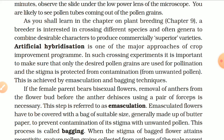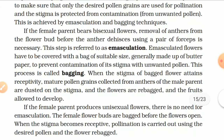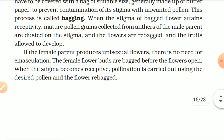Emasculated flowers have to be covered with a bag of suitable size, generally made of butter paper, to prevent contamination of the stigma with unwanted pollen — this process is called bagging. When the stigma of the bagged flower attains receptivity, mature pollen grains collected from the anther of the male parent are dusted on the stigma, and the flowers are re-bagged and the fruits are allowed to develop. If the female parent produces unisexual flowers, there is no need for emasculation. The female flower buds are bagged before the flower opens; when the stigma becomes receptive, pollination is carried out using the desired pollen and the flower is re-bagged.